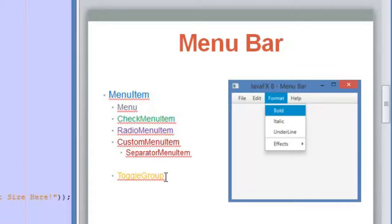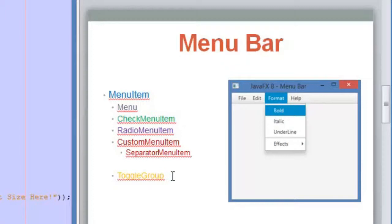I also want to mention that we have a ToggleGroup. A ToggleGroup is necessary in order to create a series of options with the RadioMenuItem. We can add different radio menu items and using the ToggleGroup we make it so the user can only select one at a time. That's why we use the ToggleGroup.